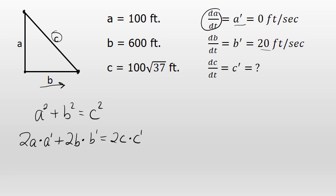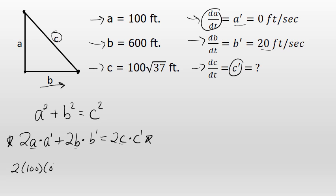All of the values in this derivative equation have been accounted for except the one I'm trying to find — the rate of change of side C, which is the rate at which the boat is moving away from the lighthouse keeper. I'll substitute all known values in: 2 times A (which is 100) times A prime (which is 0), plus 2 times 600 times B prime (which is 20), equals 2 times C (which is 100√37) times C prime.